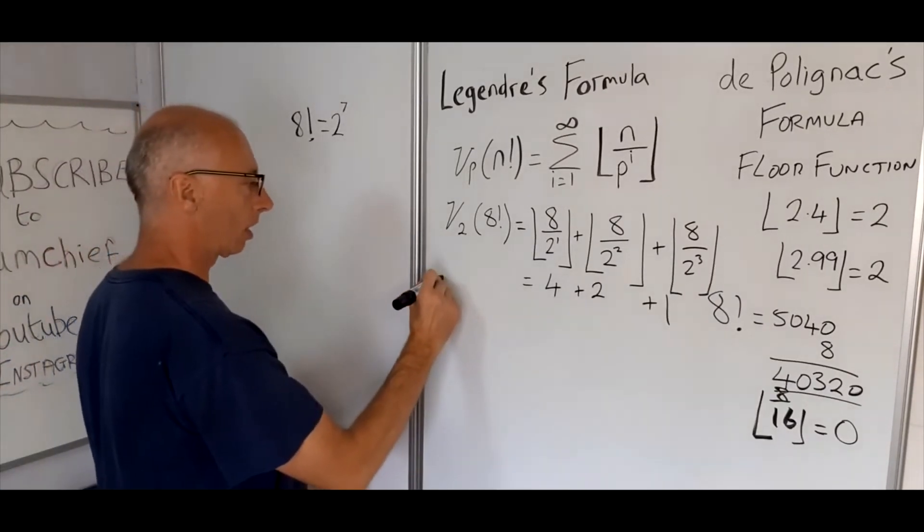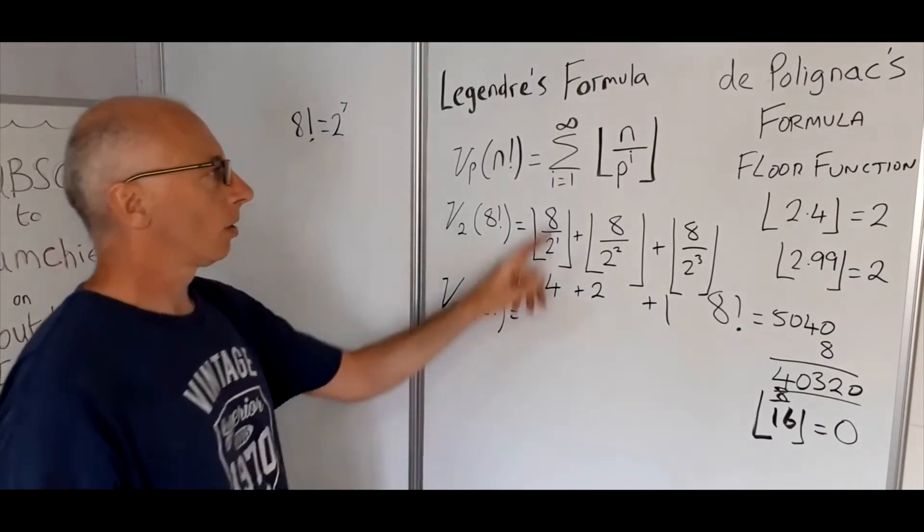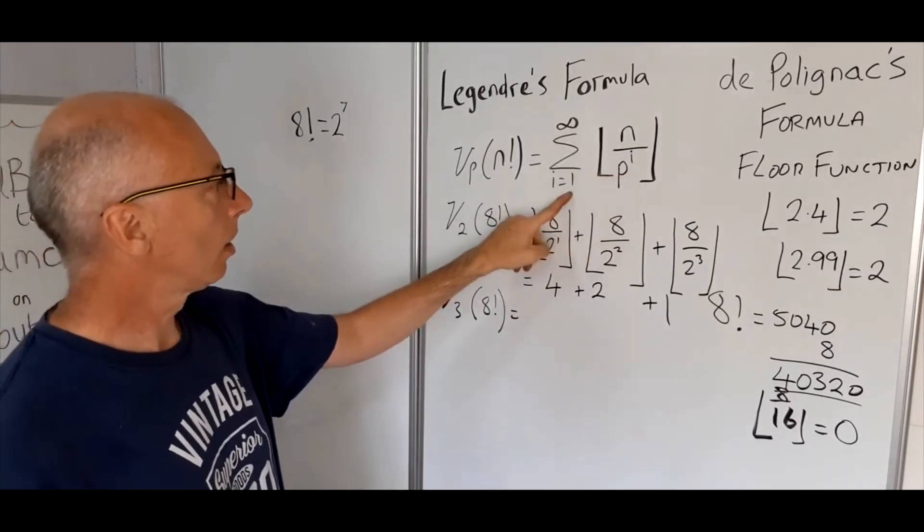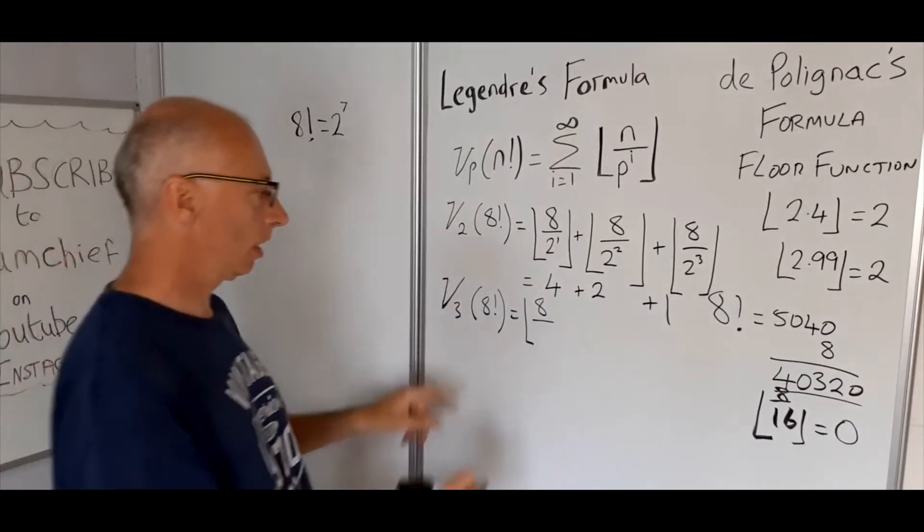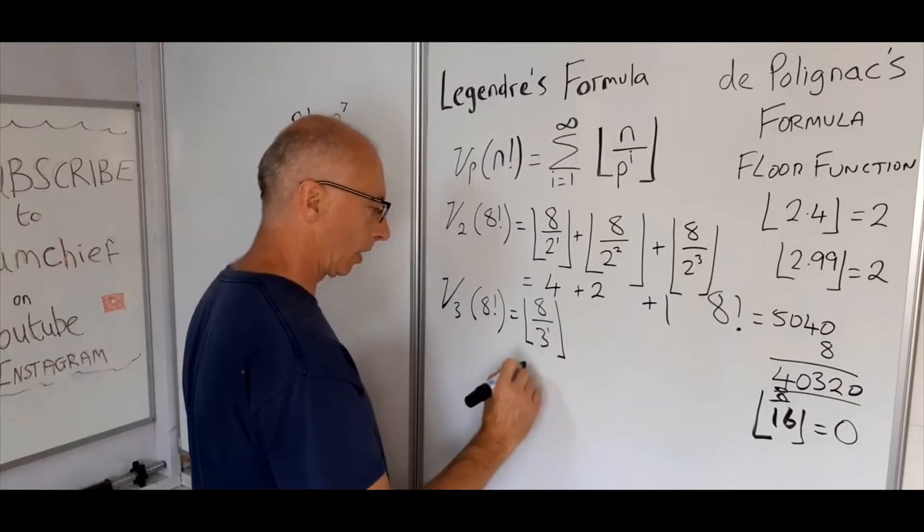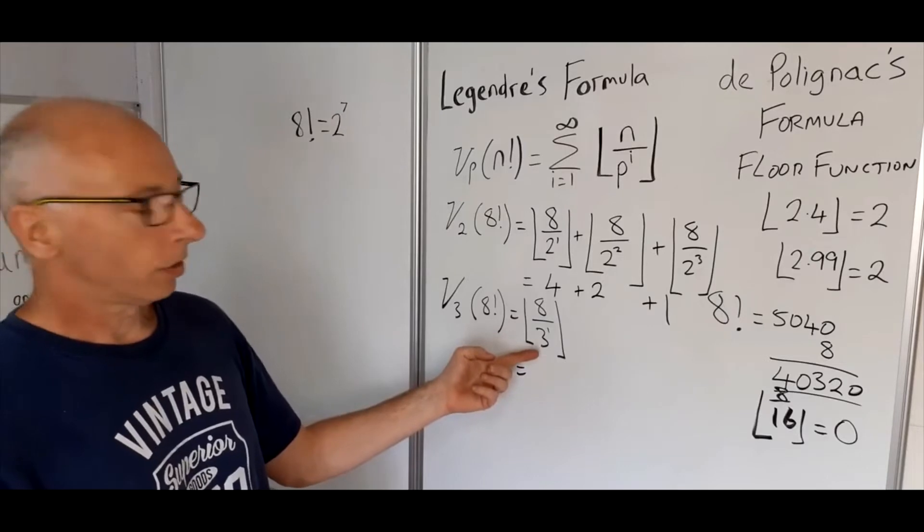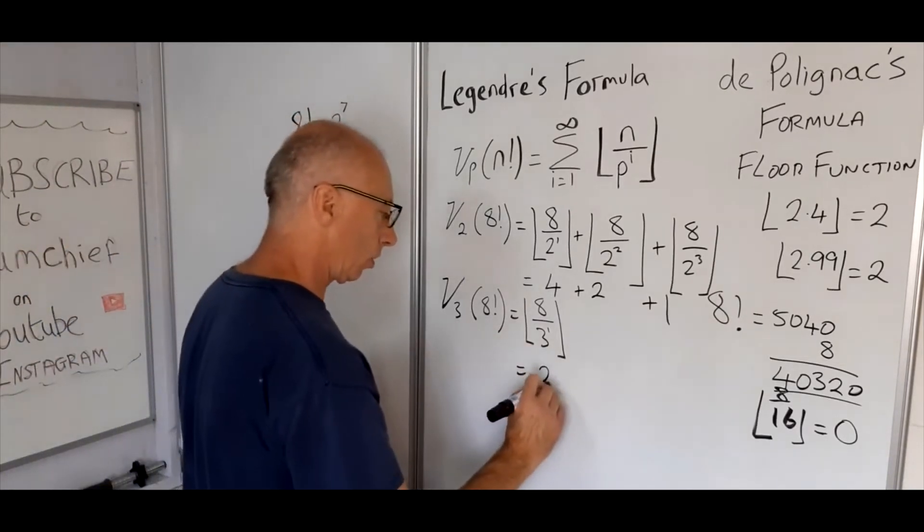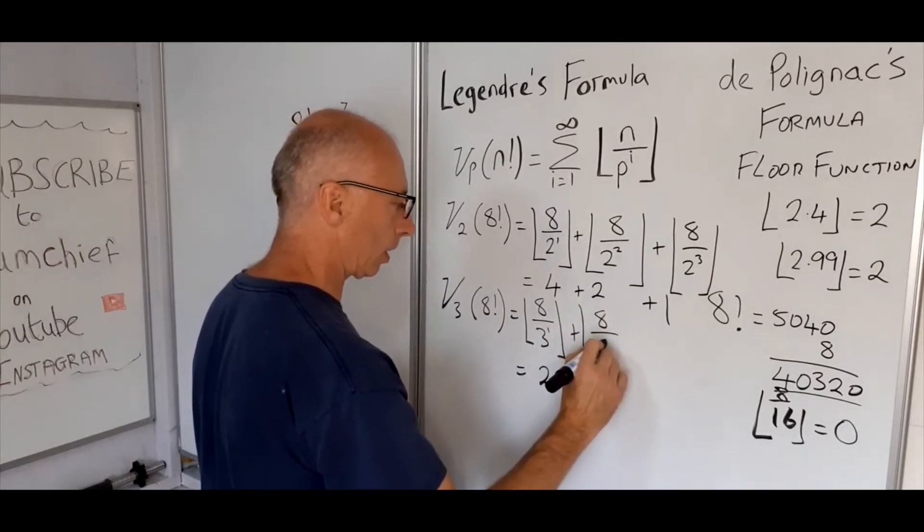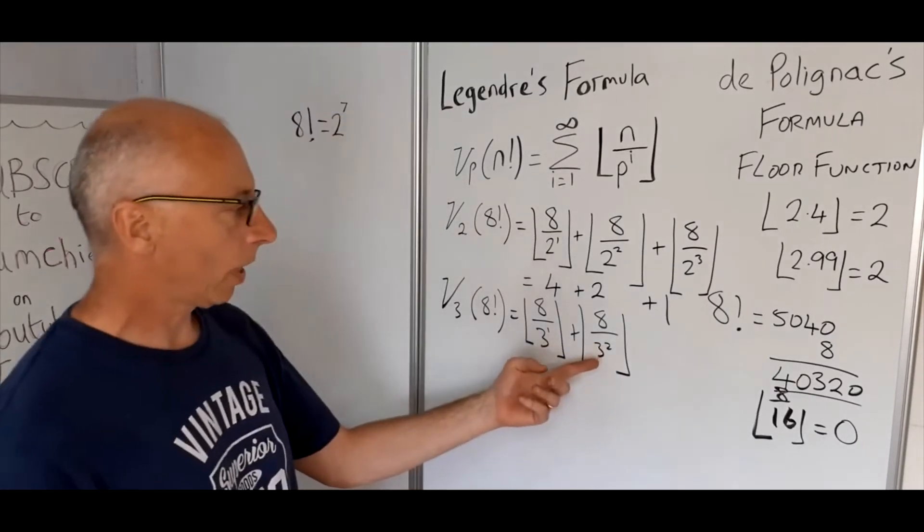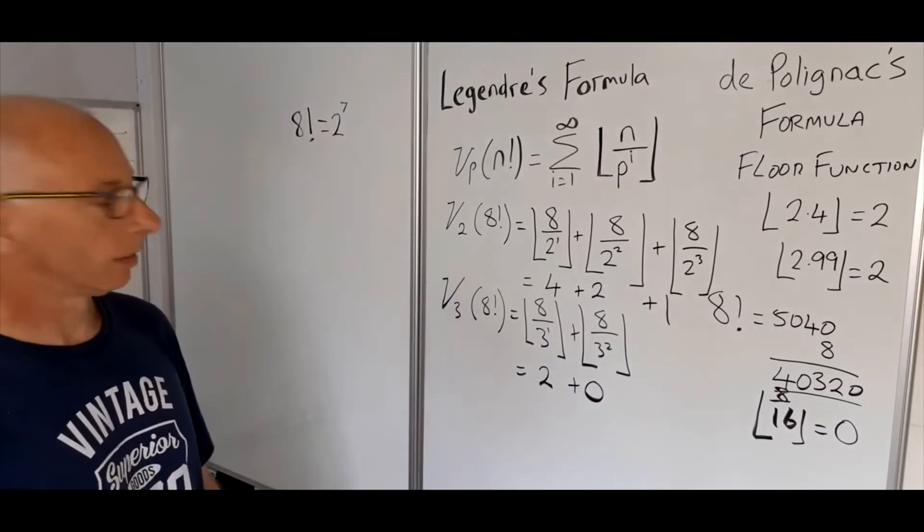So now let's try 3. So nu_3 of 8 factorial. So using this formula, n is 8, i we start from 1. So 8 divided by, this time we've got p is 3, 3 to the power of 1. And that equals, it's just under 3, so it's 2 and 2 thirds, so that is now going to be 2. So the next one we want is 8 over 3 squared. Well, 8 over 3 squared is 8 over 9, so the floor of that is going to be 0. So that's that, come to the end.